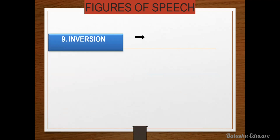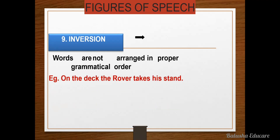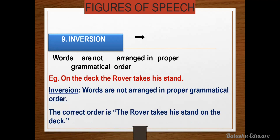The next is inversion — words are not arranged in proper grammatical order. For example, 'On the deck the lower text is a stand' — here is the inversion figure of speech because words are not arranged in proper grammatical order. The correct order would be 'The lower text is a stand on the deck.' It is very simple, but we can get confused with it sometimes.